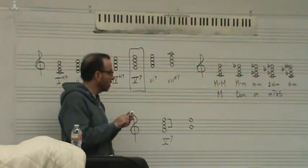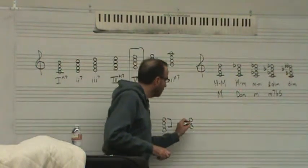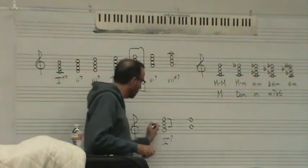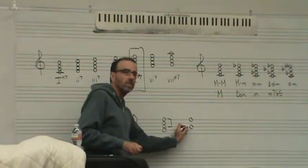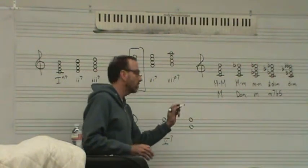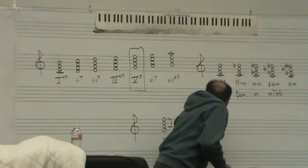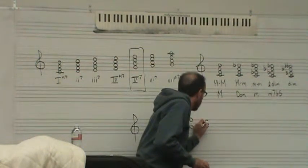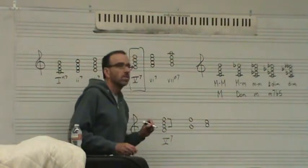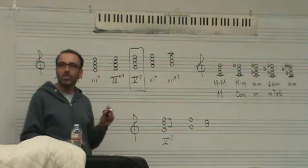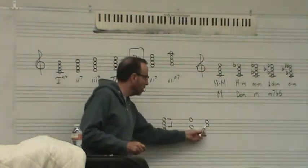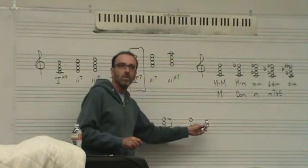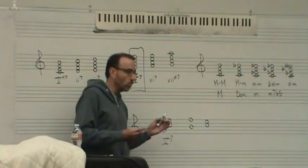And what normally happens is that the leading tone, right, so for the key of C major, this B is the leading tone. And the leading tone wants to resolve up. And the seventh wants to resolve down. Sometimes we talk about it in solfeggio terms. Ti to Do and Fa to Mi.